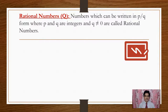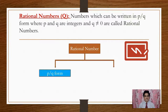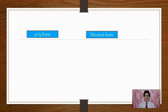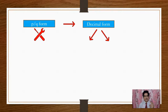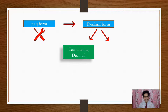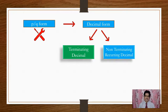We have a condition on the denominator that it cannot be 0. Rational Numbers can be written in two different forms — P by Q form and decimal form. You can convert a Rational Number from P by Q form to decimal form, and you can get either a Terminating Decimal or a Non-Terminating Recurring Decimal.